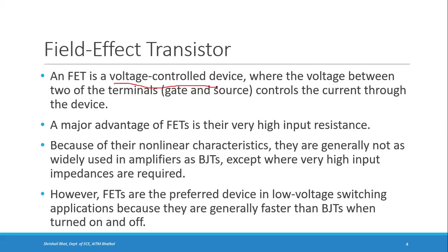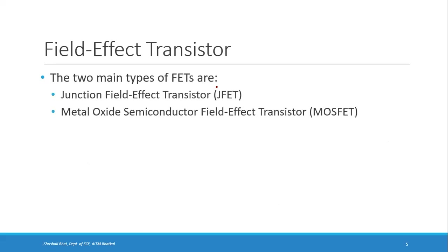A major advantage of FET is its very high input impedance, or very high input resistance. FETs have nonlinear characteristics so they are not widely used in amplifiers as BJTs are, which are widely used in linear amplifiers. FETs are used only when we have a requirement of very high input impedance. They are also used in low-voltage switching applications because their switching speed is very fast compared to BJTs.